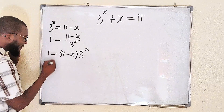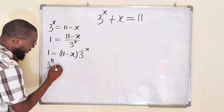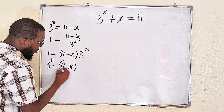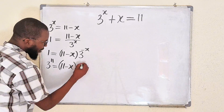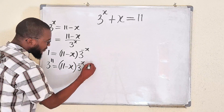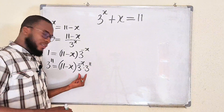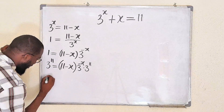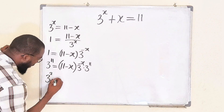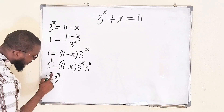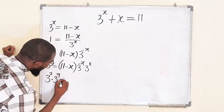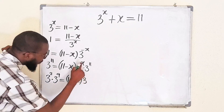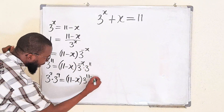We also have to multiply the left-hand side by 3 to the power of 11 to keep the equation balanced. So 1 times 3 to the power of 11 is 3 to the power of 11. This is equal to 11 minus x, multiplied by 3 to the power of negative x multiplied by 3 to the power of 11. Having the same base, we add the exponents since we are multiplying, giving us 11 minus x.